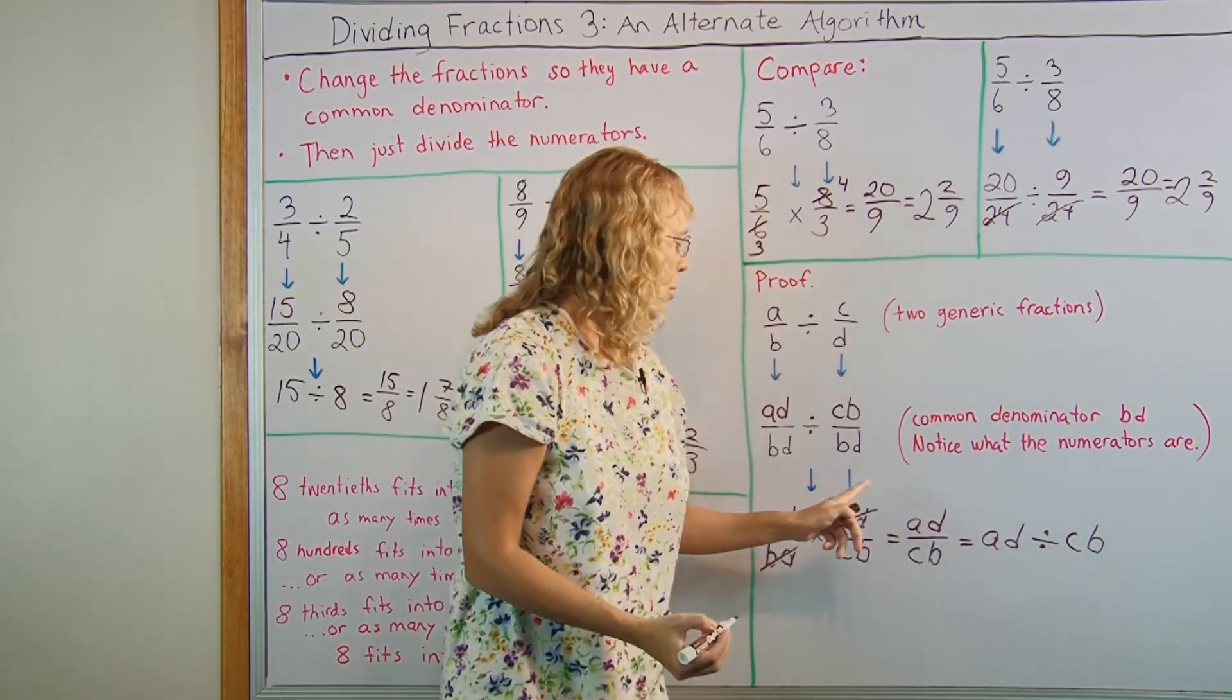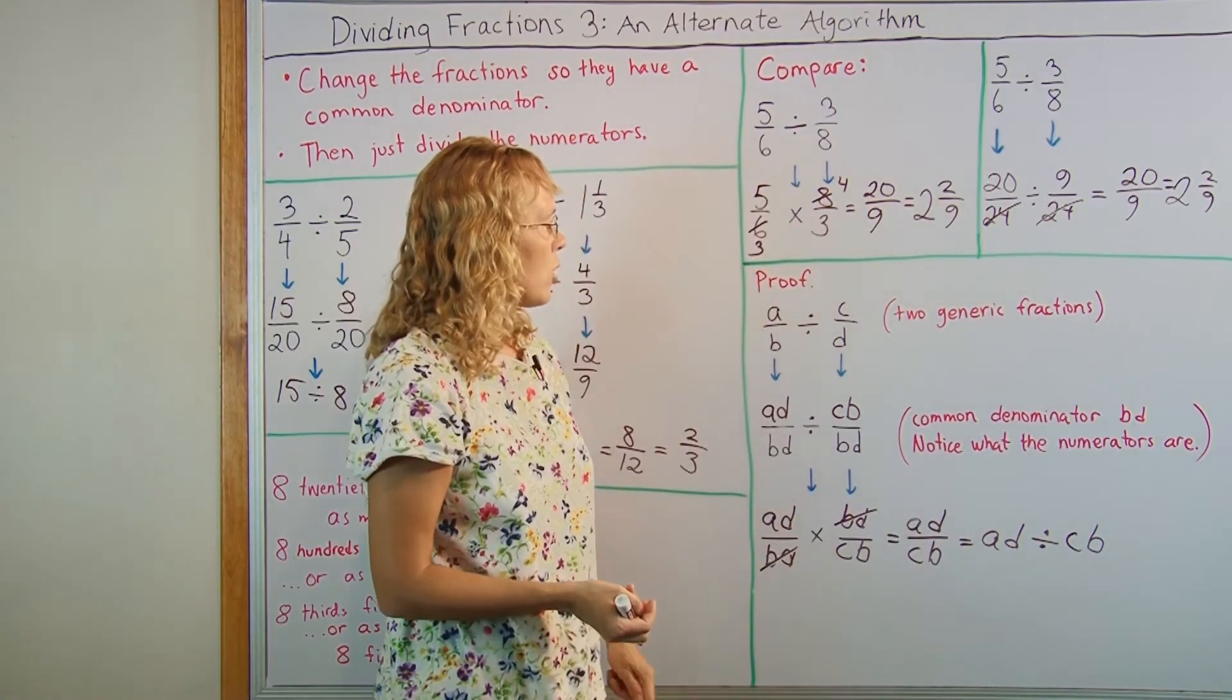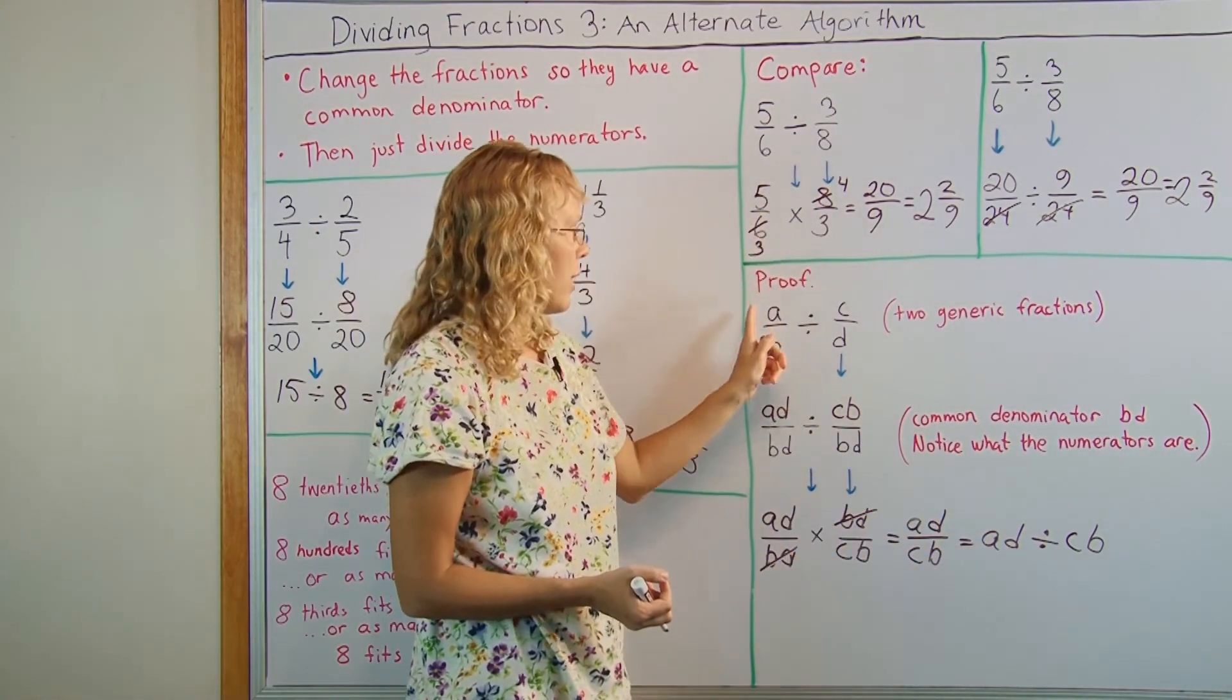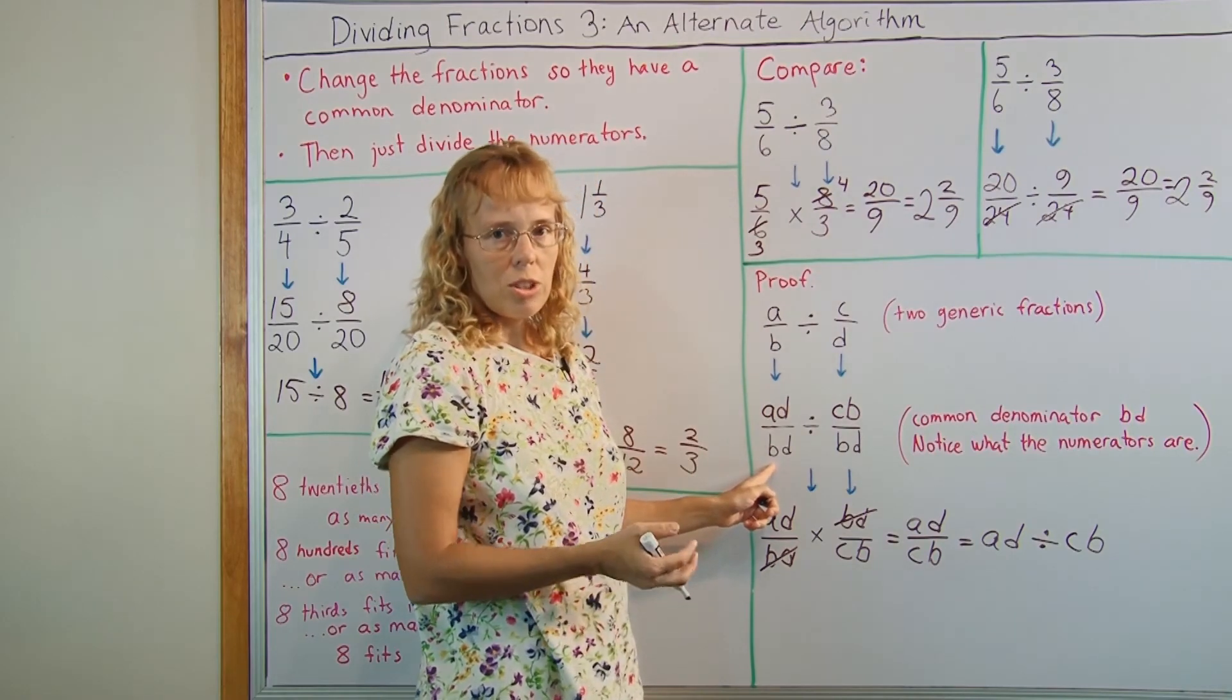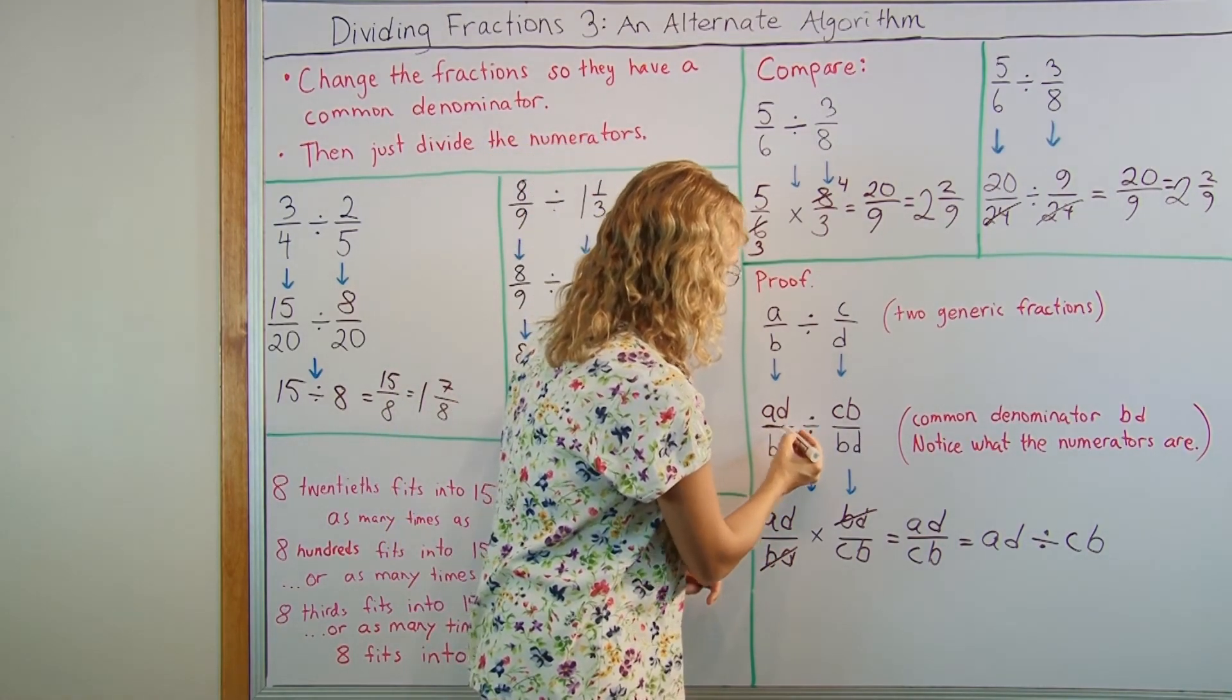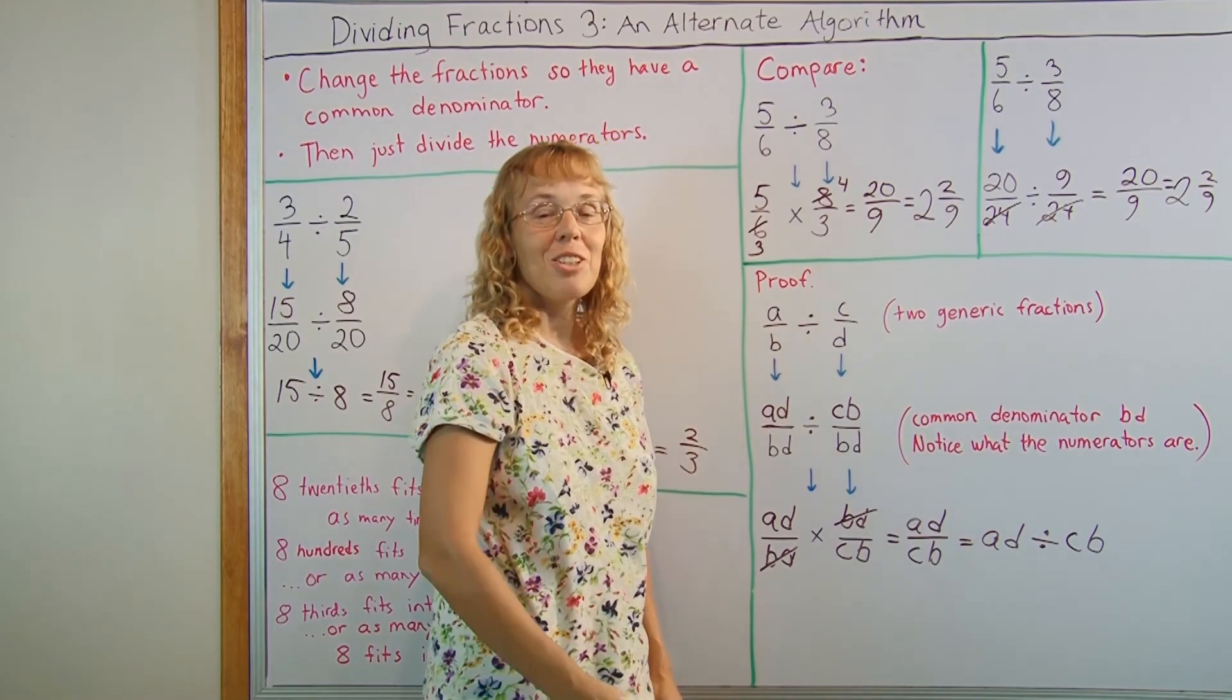And that is exactly what I had in this step in the numerators. AD here divided by CB. Those are the numerators. So, from here I could go directly to here. Take AD and then divide that by CB. And they are the numerators here if you first wrote the fractions using a common denominator. So, this proof can help maybe some students to get convinced that this method really works. And convince you too.